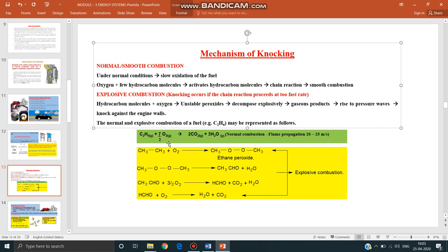So here ethane molecule has been taken. During knocking process, ethane peroxide will be formed. This ethane peroxide is highly unstable. It will undergo decomposition and produce acetaldehyde and water. Again, this acetaldehyde reacts with oxygen and produces formaldehyde and carbon dioxide plus water. Formaldehyde again reacts with oxygen and gives water and carbon dioxide. If you add all these products, you get this particular reaction. So this is what happens in the case of explosive combustion, mainly due to the production of peroxides.